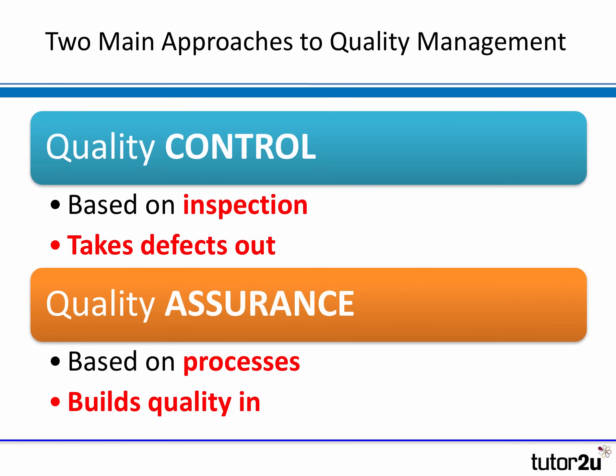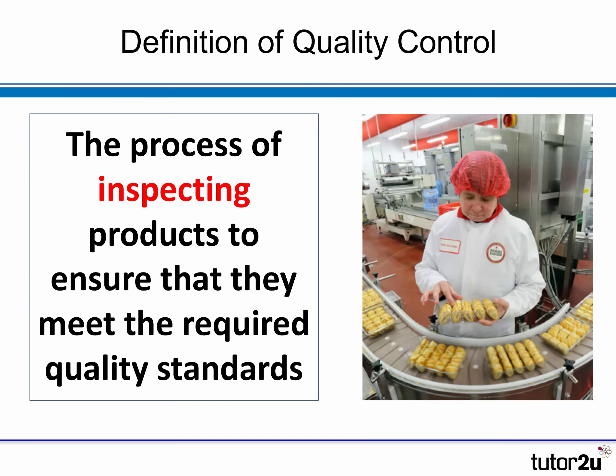So quality control and quality assurance sound similar but they are quite different. Quality control is based on inspection, whereas quality assurance is based on trying to build quality into the business processes. Quality control can be defined as the process of inspecting products or output to ensure that the output meets the required quality standards — the keyword being inspecting.